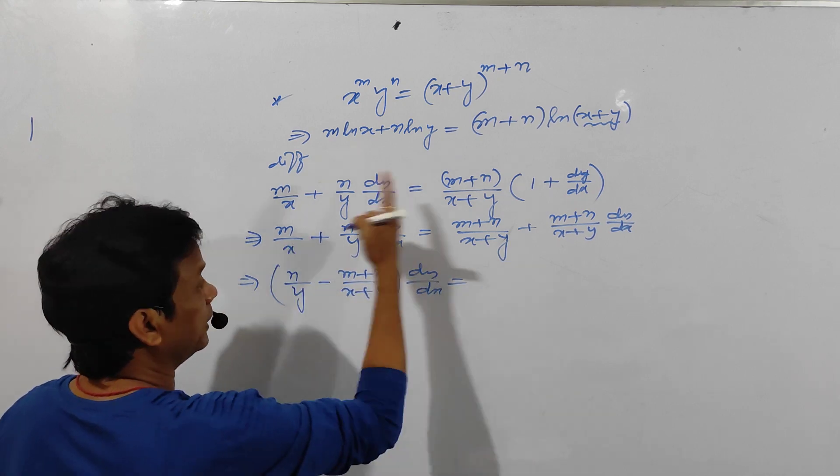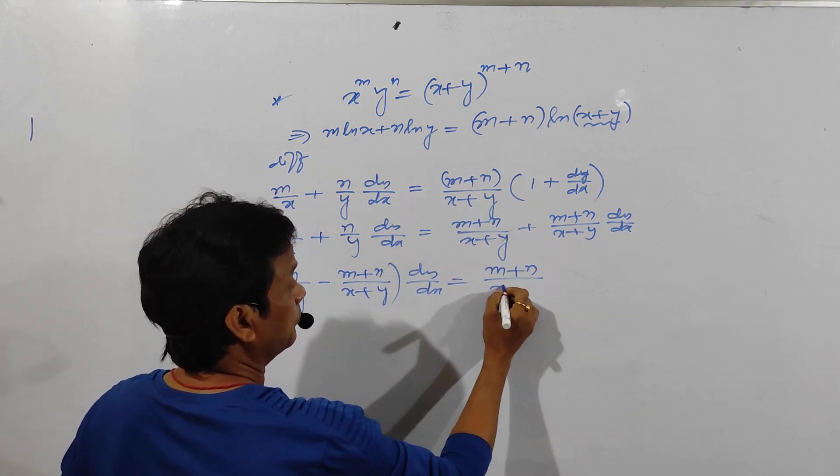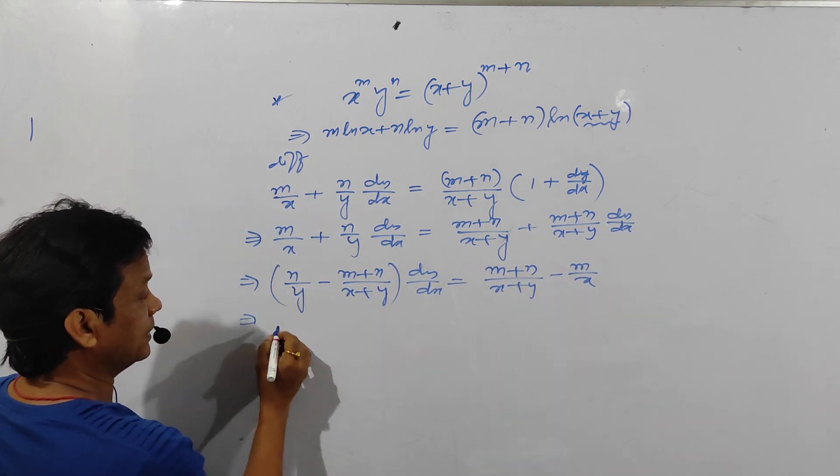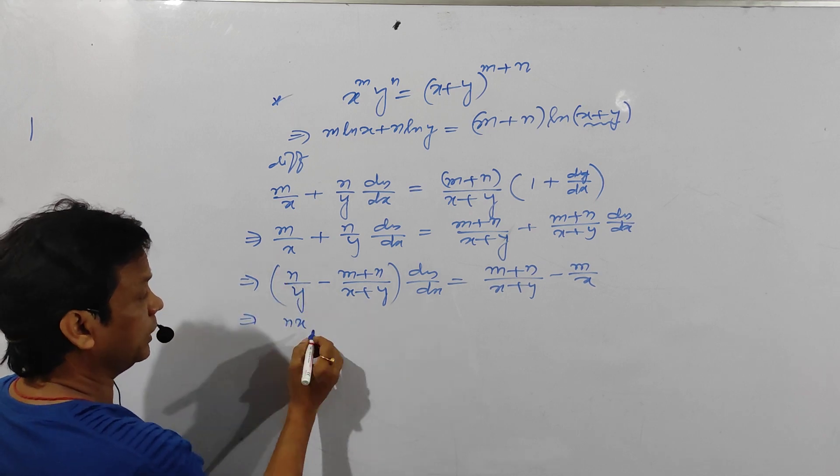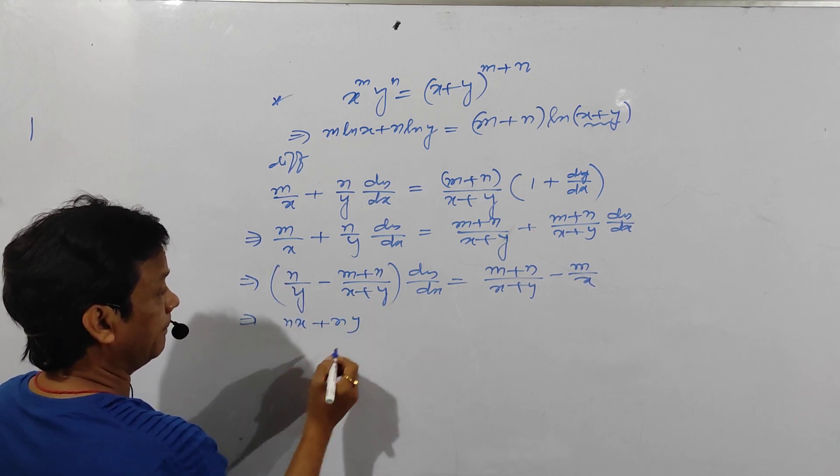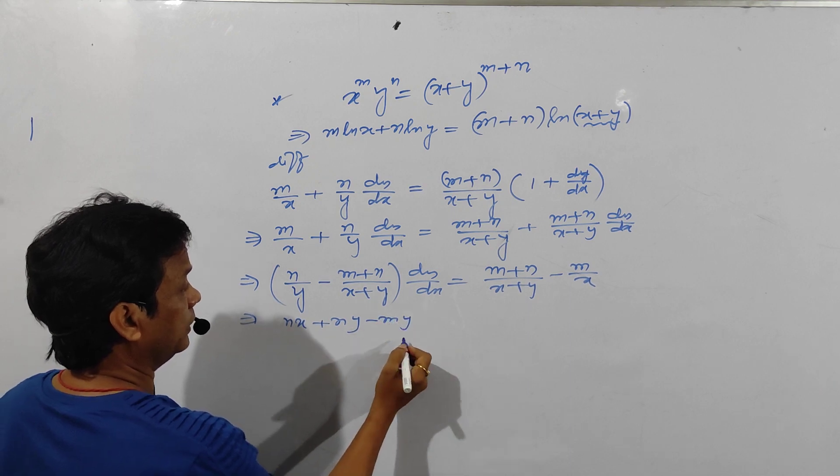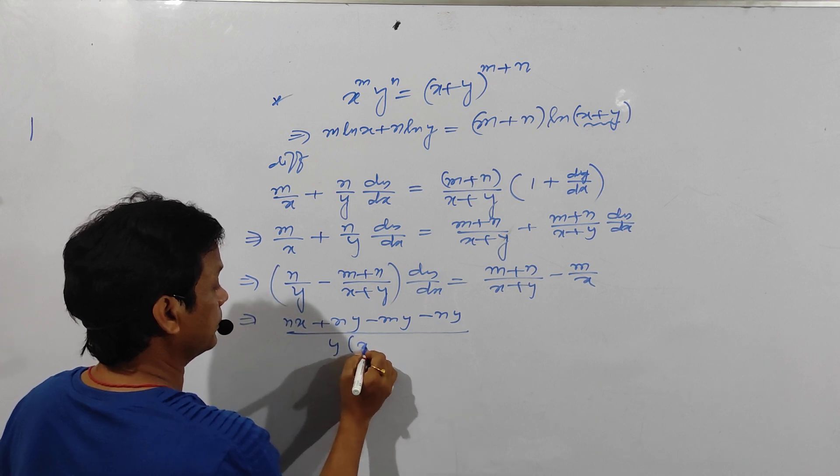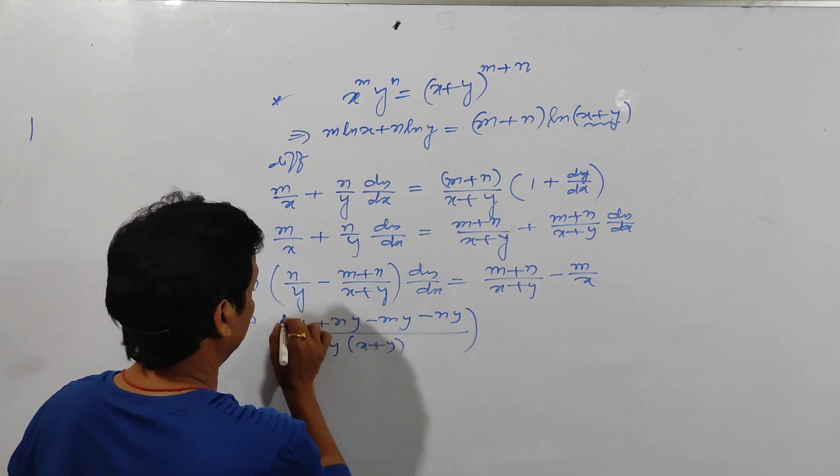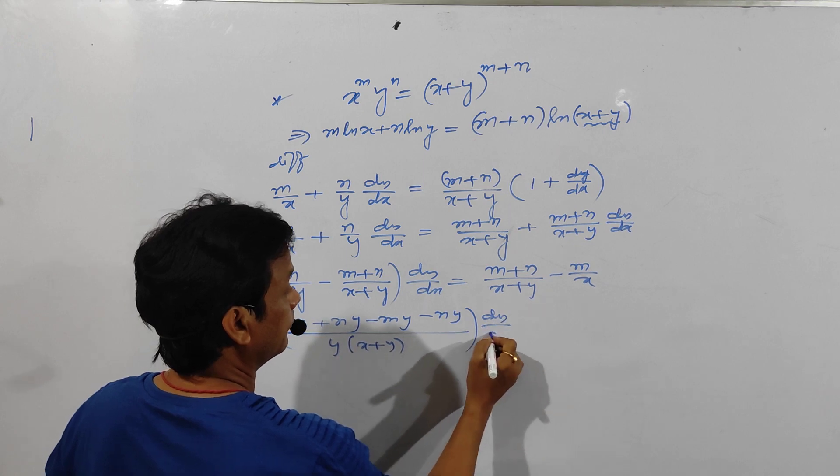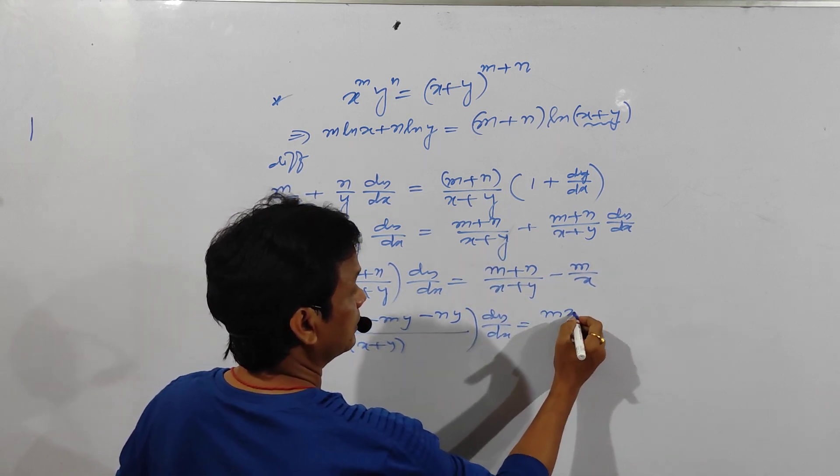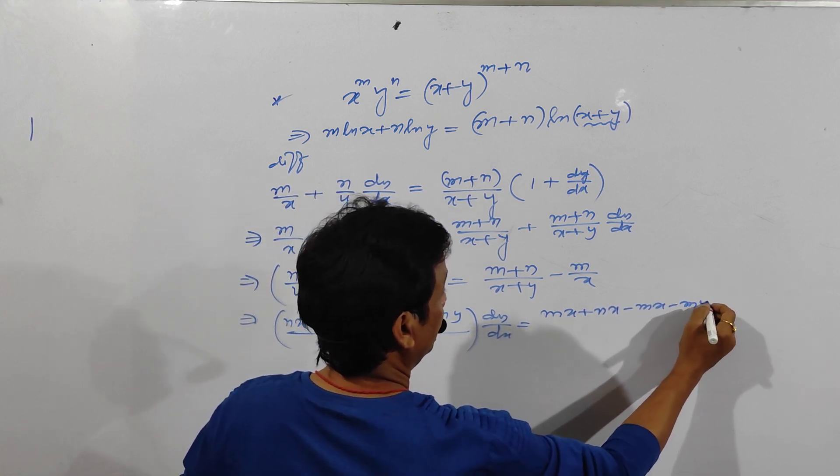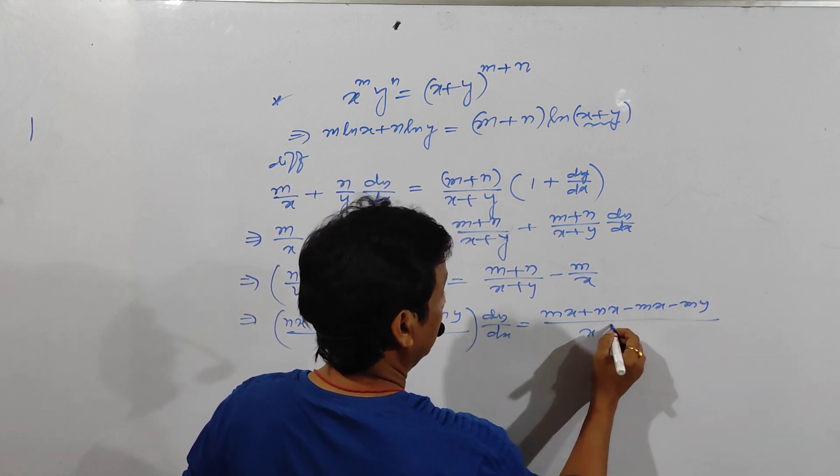Similarly this term take to right hand side: m plus n by x plus y minus n by x. Taking LCM, n into x plus y minus n into x plus y divided by y into x plus y. Here, mx plus my minus nx divided by x into x plus y.